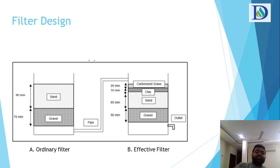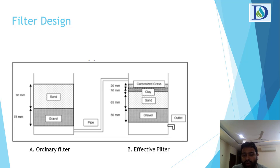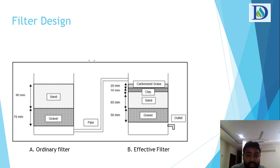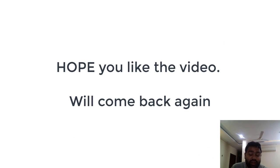For filter design, rather than going with an ordinary sand and gravel filter, Water Campus recommends considering carbonized grass, clay, and activated carbon as filter media. Activated carbon can replace ordinary media, used alongside clay, sand, and gravel to create a more effective filter for oil and grease removal.